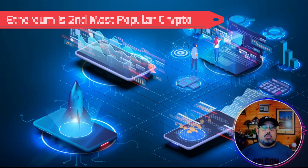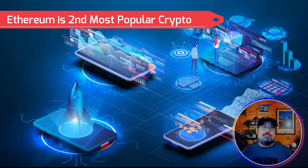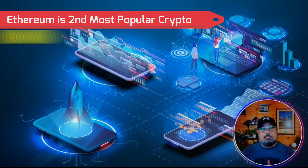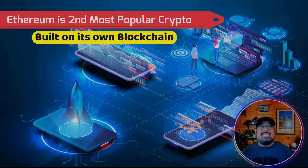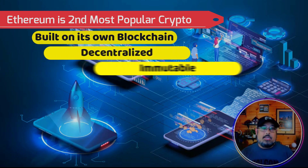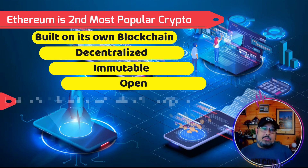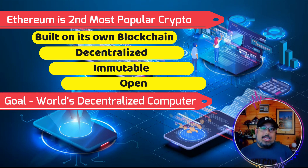As of June 2022, Ethereum is the second most popular cryptocurrency. Like Bitcoin, it's built on its own blockchain, and it's decentralized, immutable, and open. Unlike Bitcoin, Ethereum's goal is to become the world's decentralized computer.